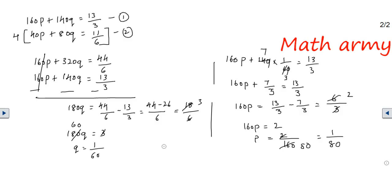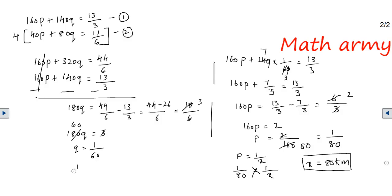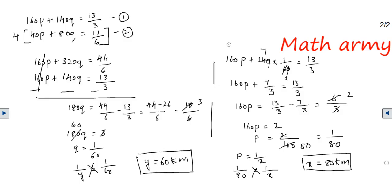Since p = 1/x = 1/80, cross-multiplying gives x = 80. And since q = 1/y = 1/60, we get y = 60. Here x is the speed of the car and y is the speed of the train. So the car speed is 80 kilometers per hour and the train speed is 60 kilometers per hour.